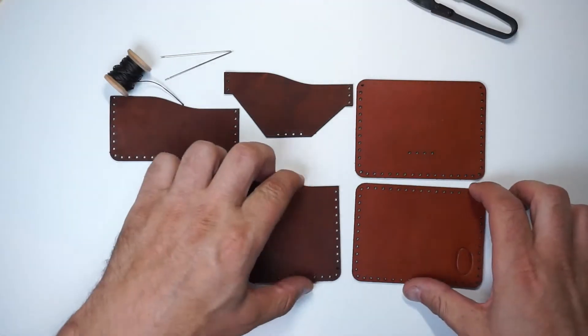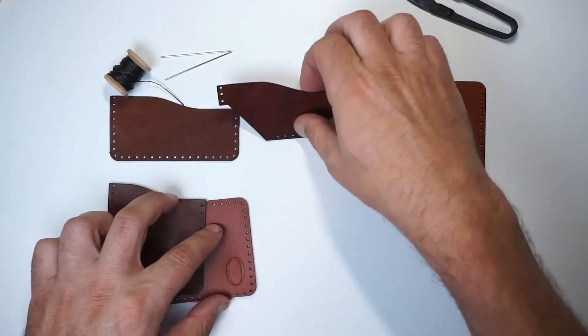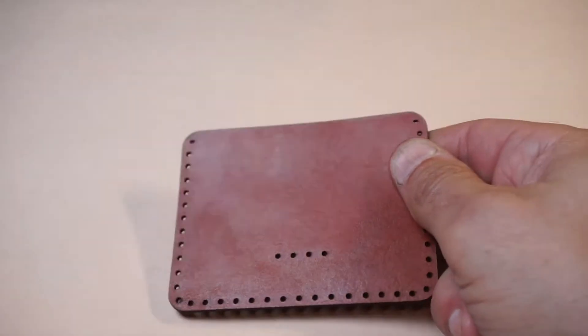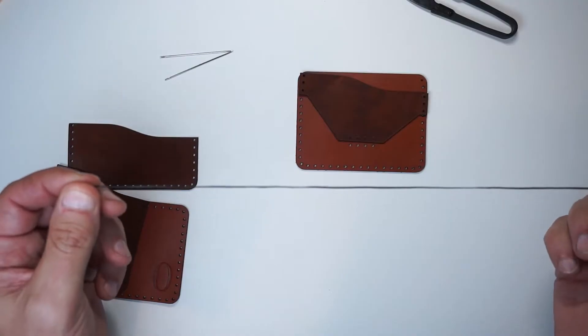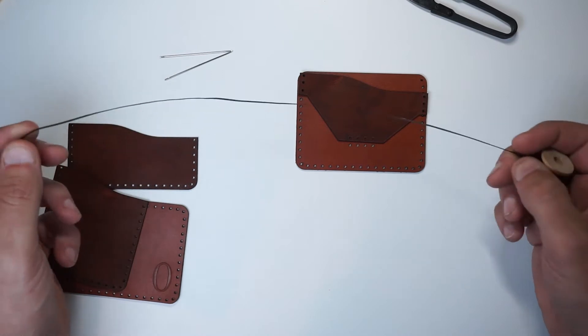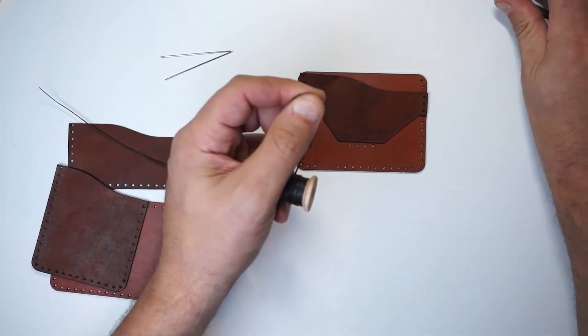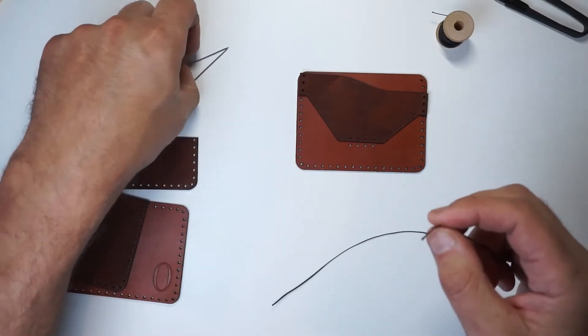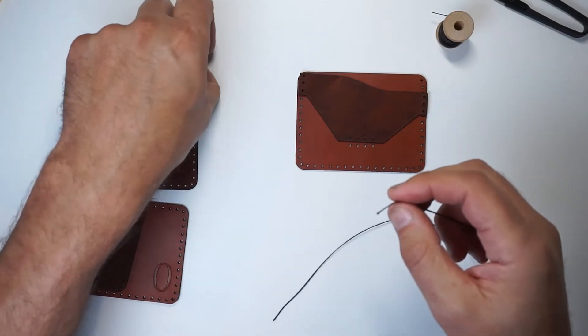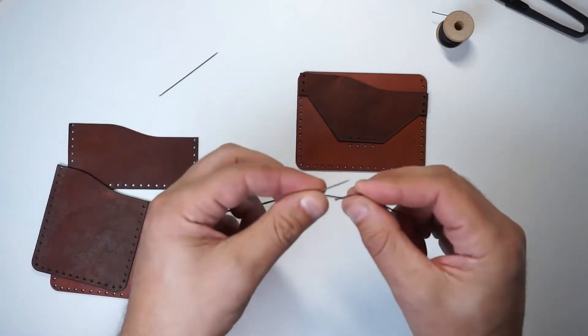Now we're going to start with this stitch line right here, these four, and so we'll need to start by cutting a piece of thread approximately 12 inches long and thread our needles. This stitch line is going to be completely hidden within the wallet, so there's no pressure, and it's a great place to start.